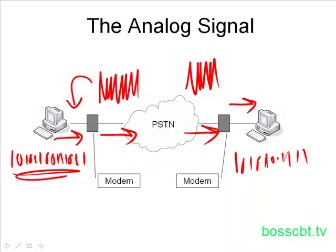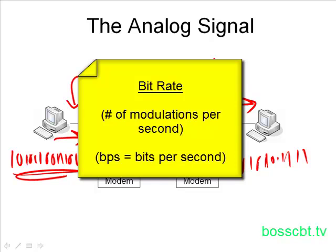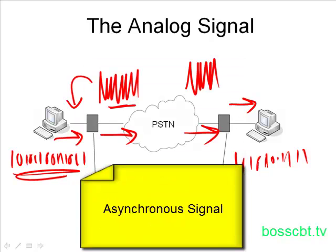How many times can you change the signal? That depends on how much information you want to send. If you change it 100 times per second, that means you're sending 100 bits per second. If you want to send 9,600 bits per second, that means every one-9,600th of a second you're making a change to the signal to represent a different bit. This is the rate, or the bit rate, of a modem. This type of signal is known as an asynchronous signal — modems will try to operate at the same speed as each other, but they will not actually change their bit rate to match the other modem. Other types of connectivity are known as synchronous, but modems are asynchronous.